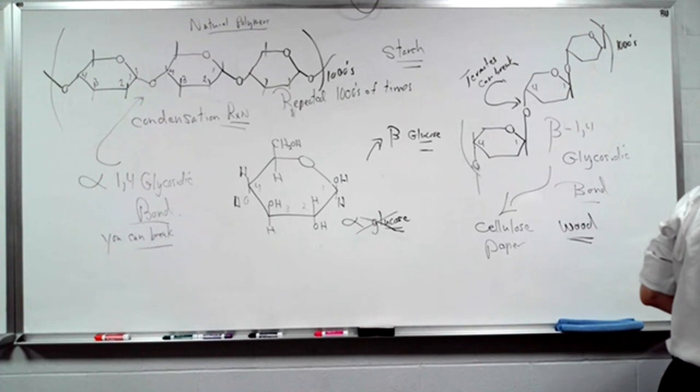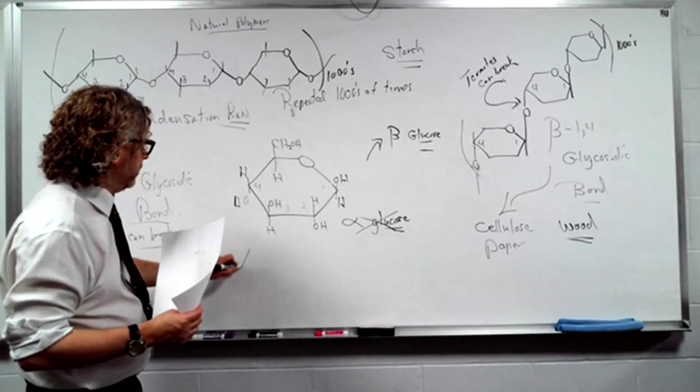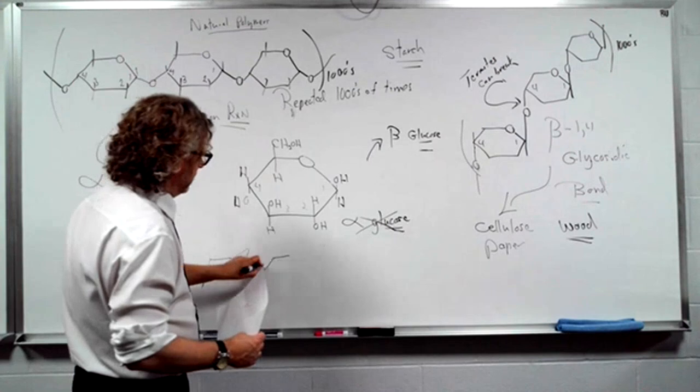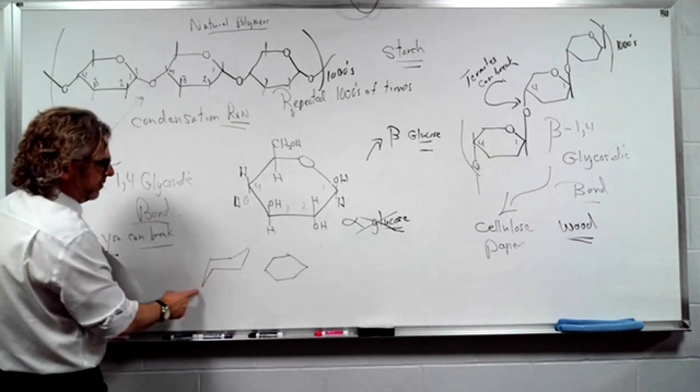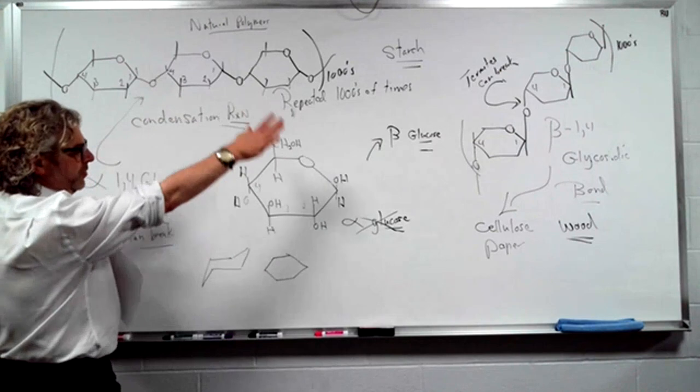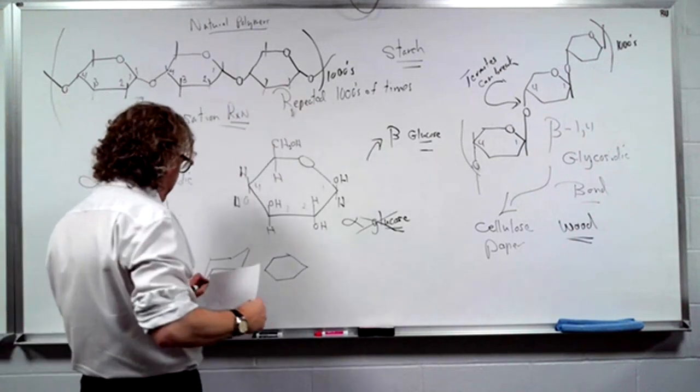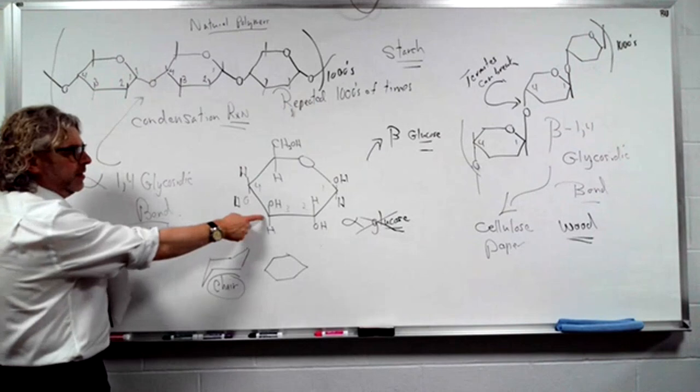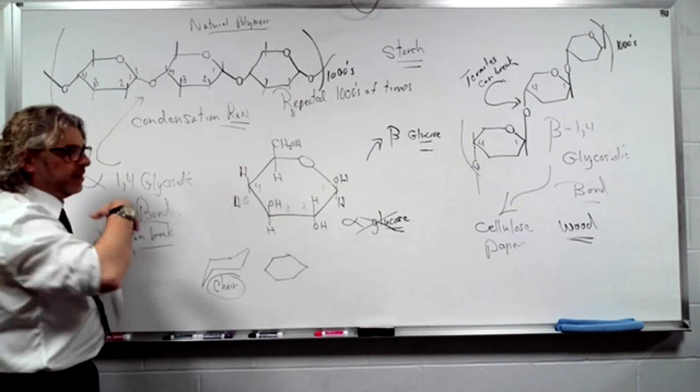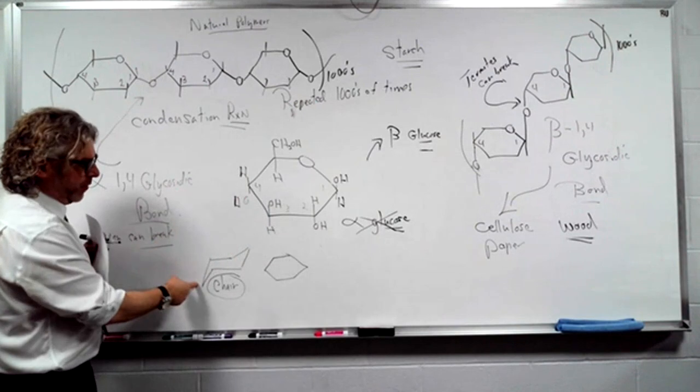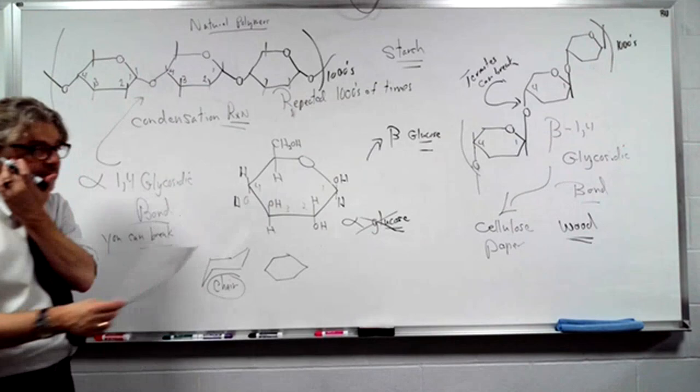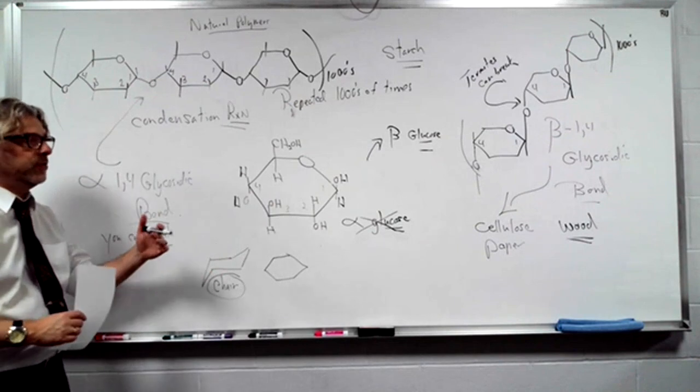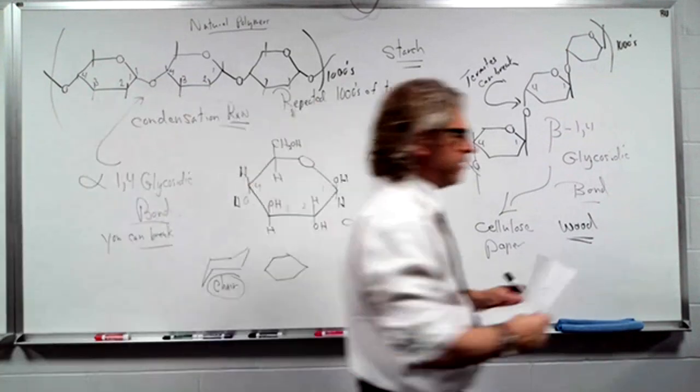Where is this picture? A version of it - they're using the chair structure because they say it's more of a puff of rings going up and down because of the 109-degree angle. In your text, you can see figures 16.6 for the alpha 1,4 glycosidic bond of starch and the beta 1,4 glycosidic bond for cellulose. That's your natural polymer.